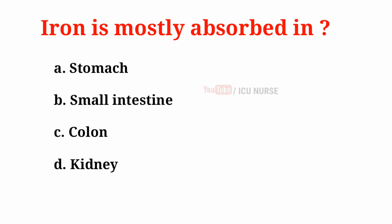Iron is mostly absorbed in: A. Stomach, B. Small intestine, C. Colon, D. Kidney. And the correct answer is B. Small intestine.